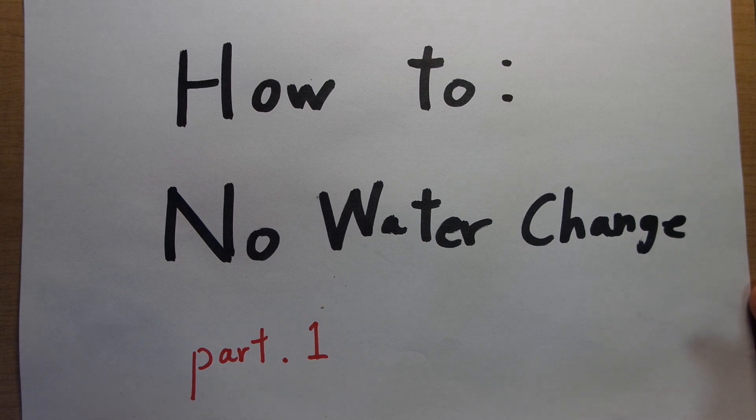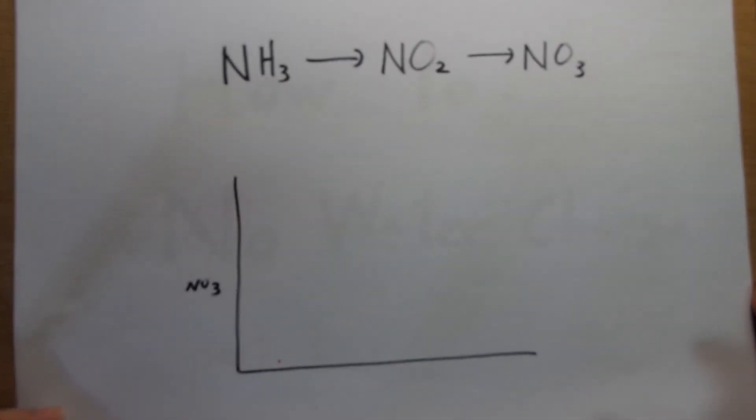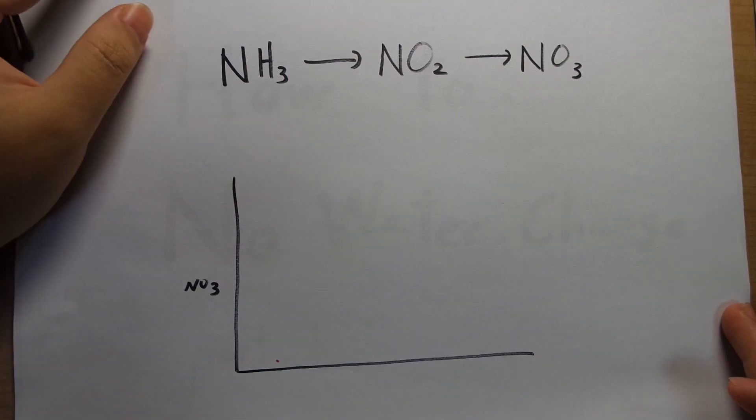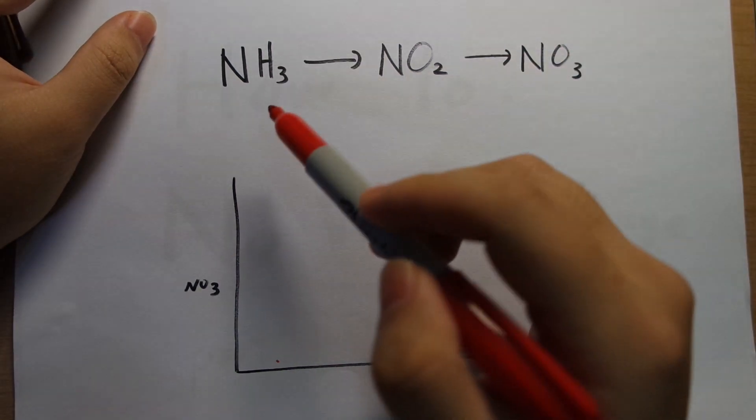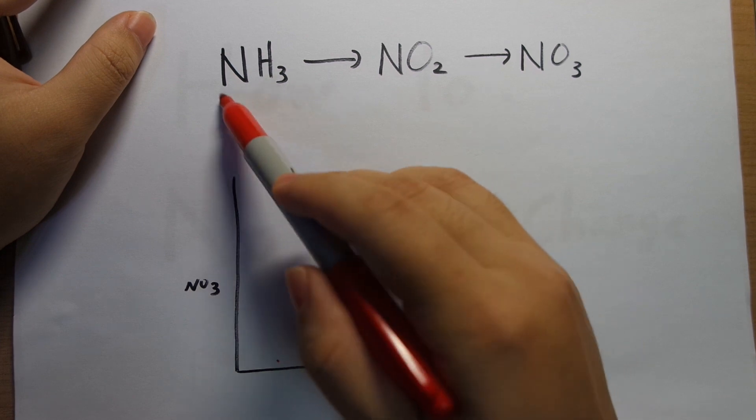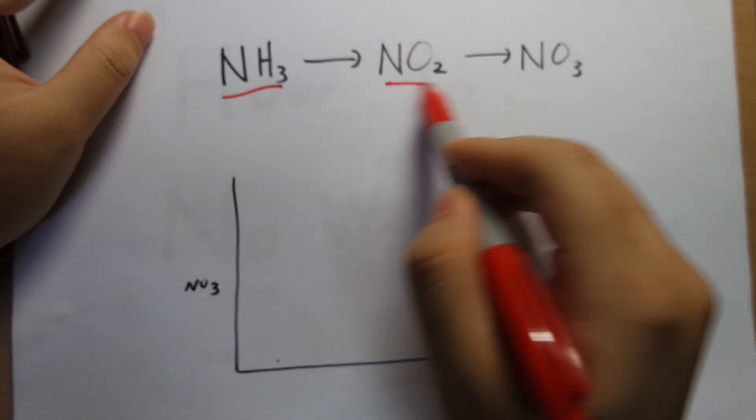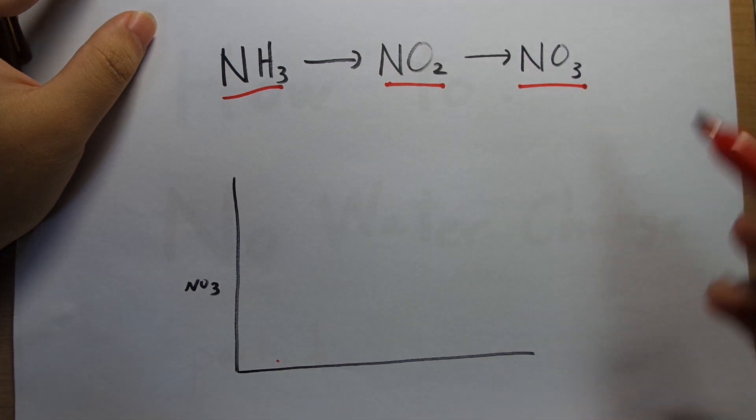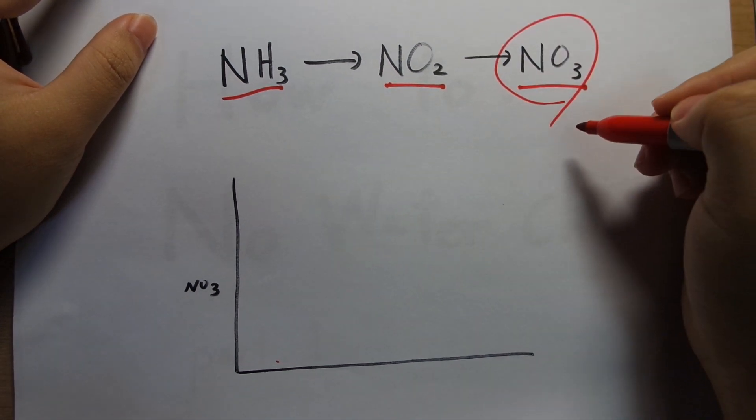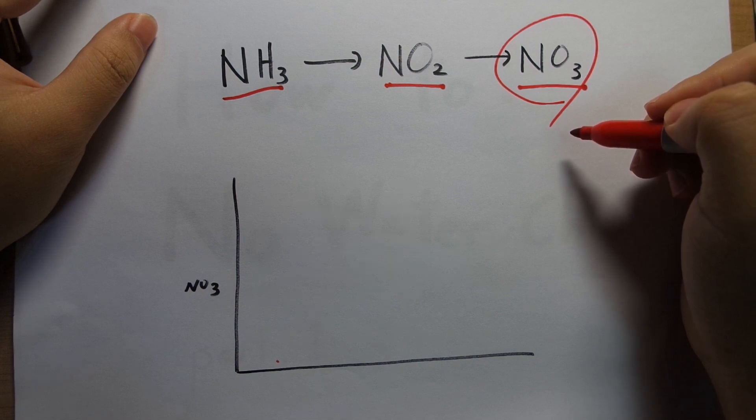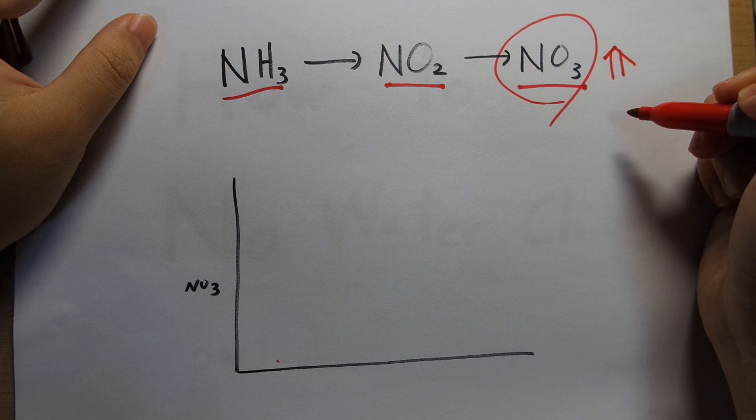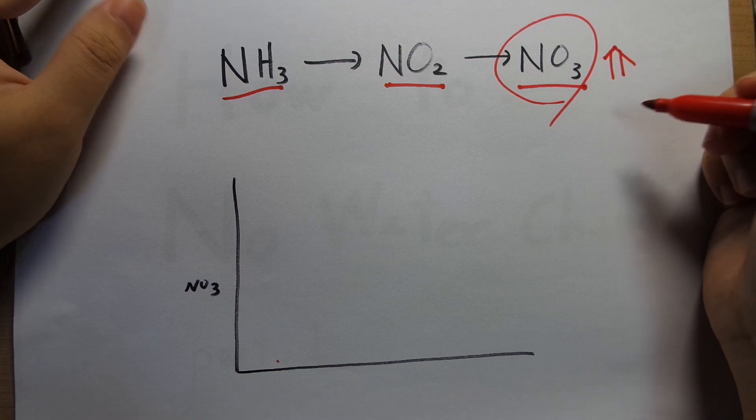Let's discuss the conventional understanding of why you need to do water changes first. You probably already know this but fish will produce ammonia and that gets converted to nitrite and that converts to nitrate. The conventional understanding goes that this nitrate is the final product of your biological filtration and this stuff will continue to accumulate until it becomes toxic enough to kill your fish.